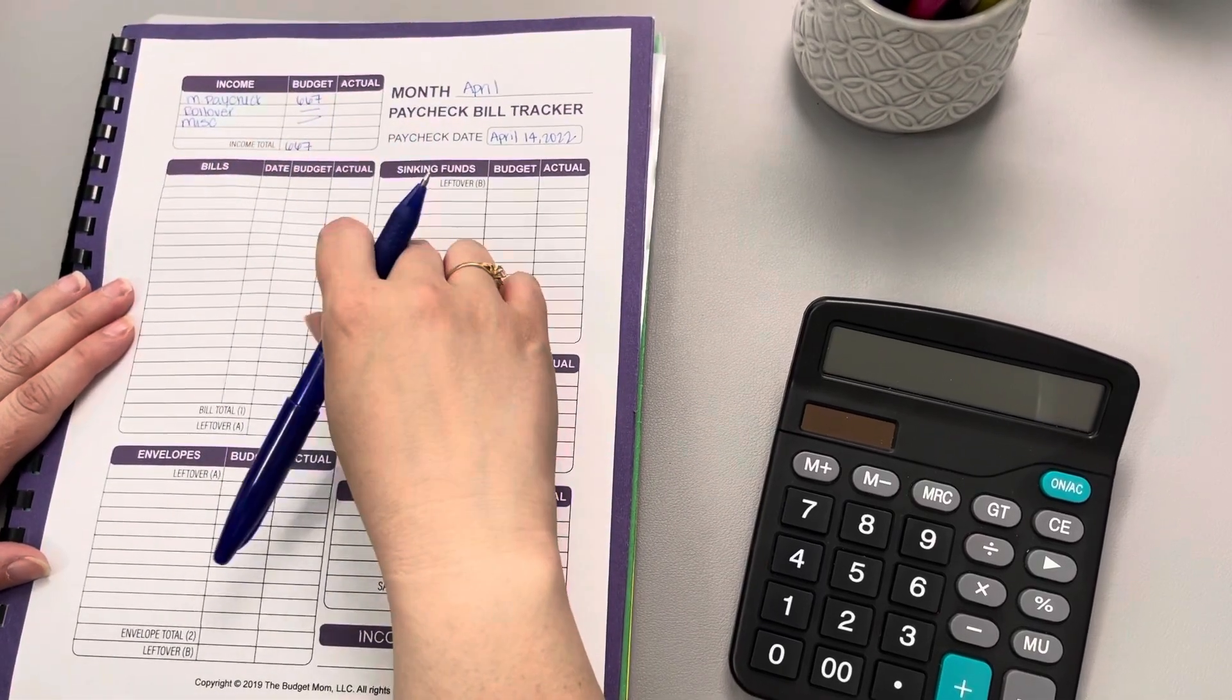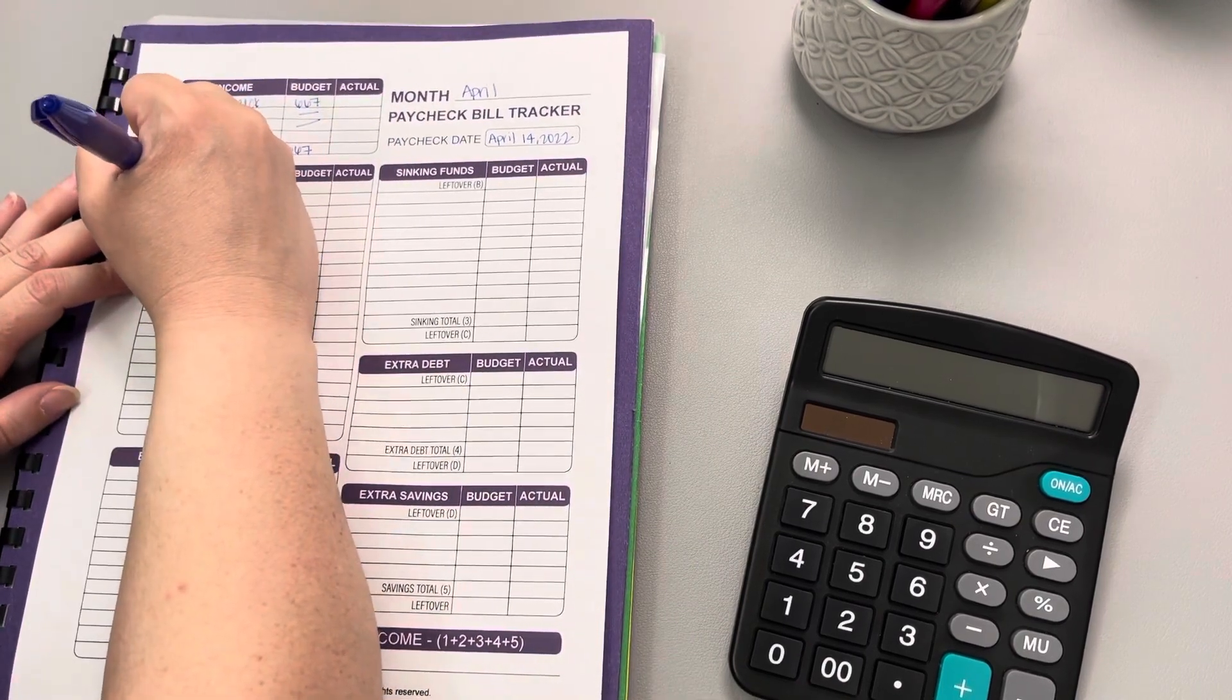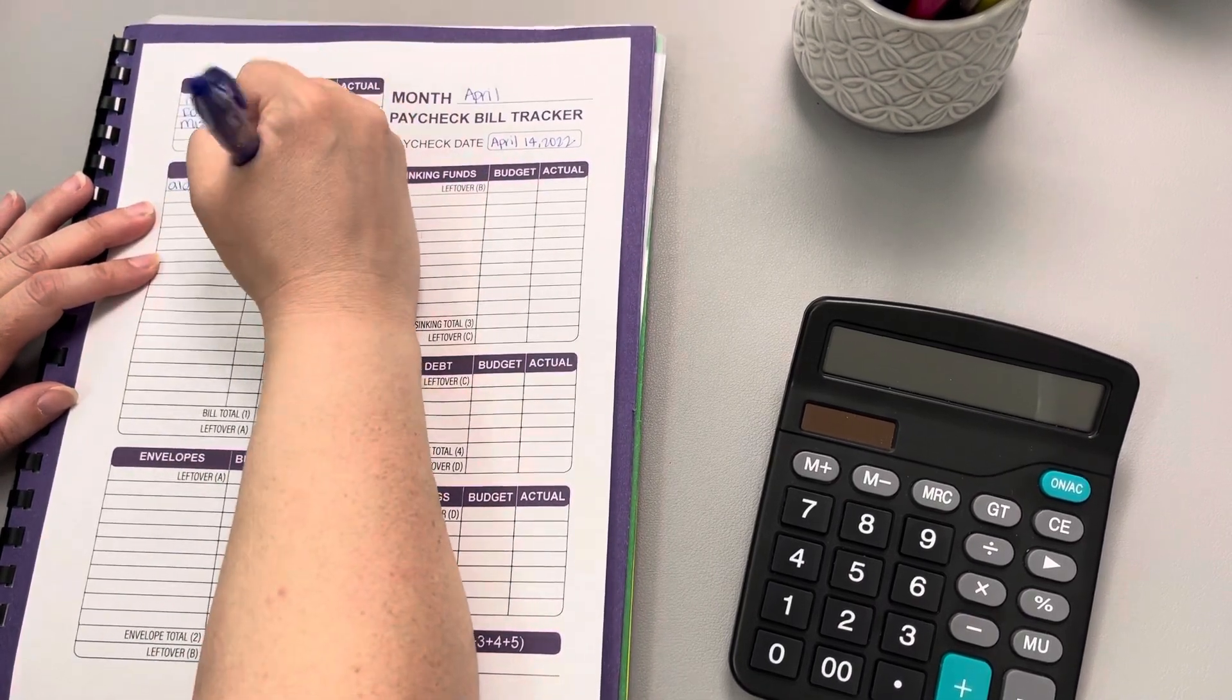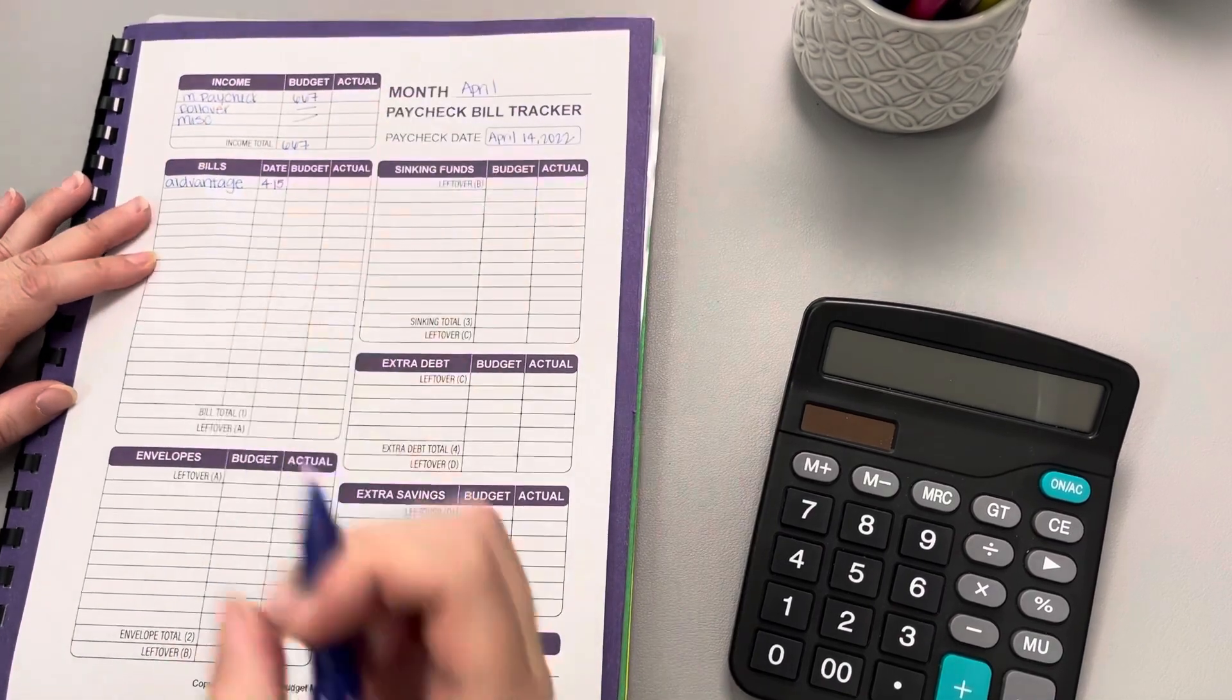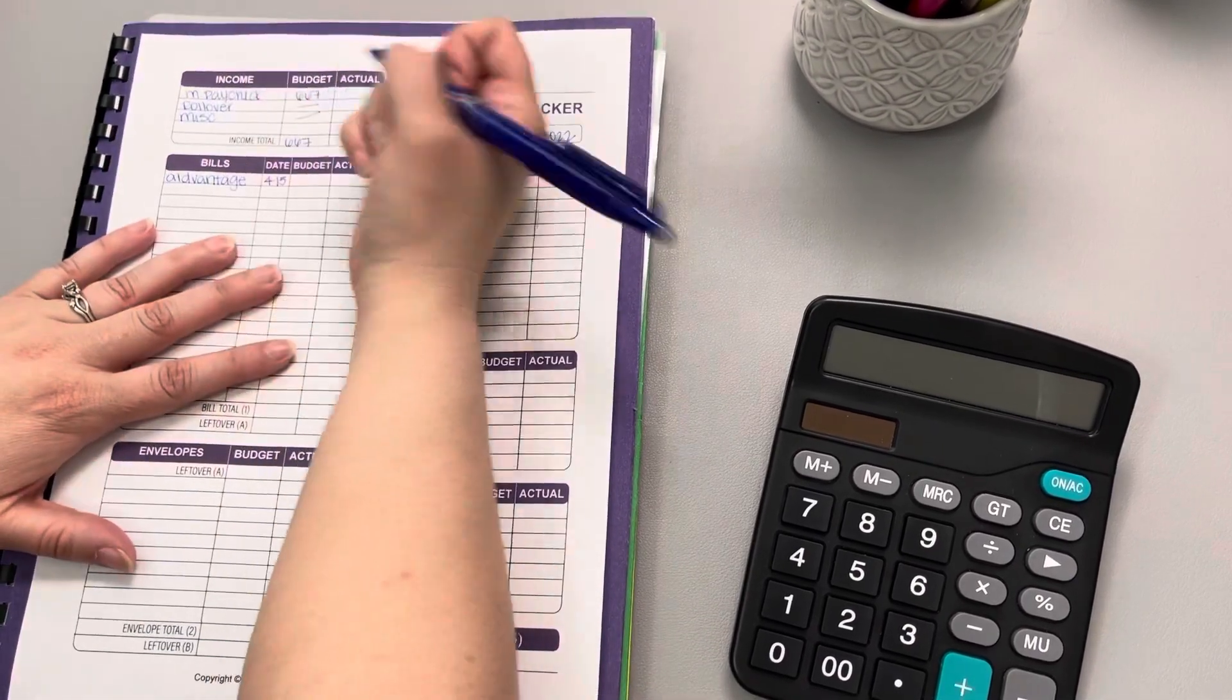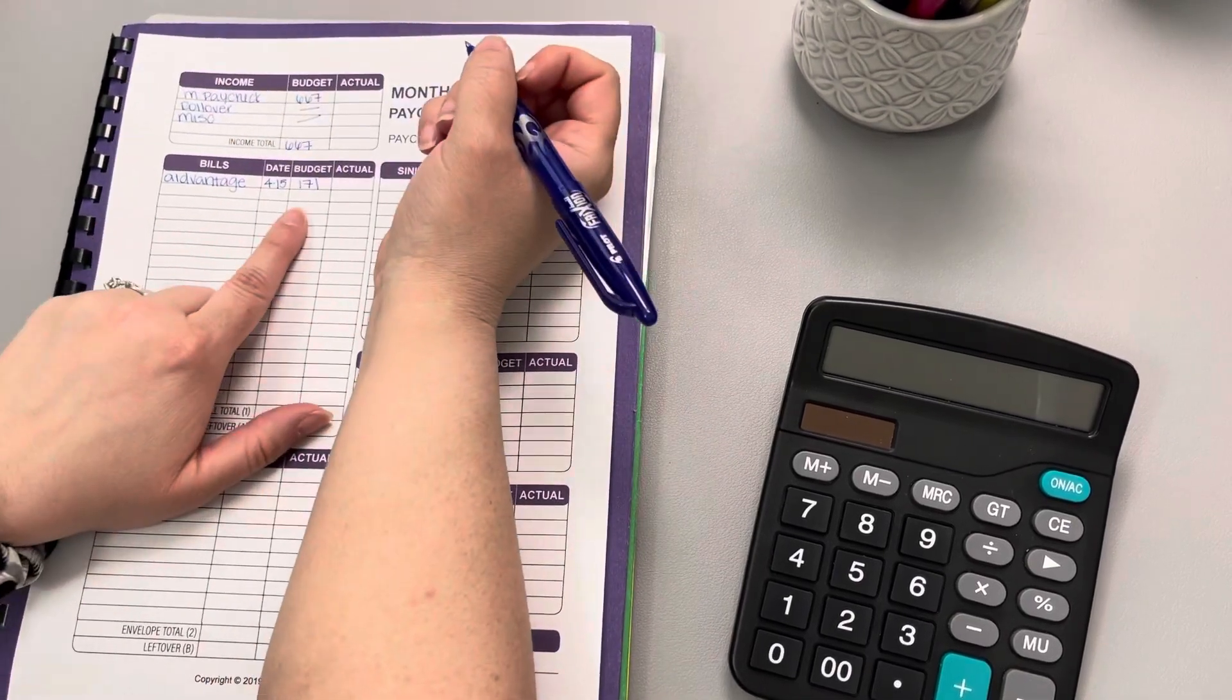Now we have three bills that come out during this week. The first is Advantage, which is my husband's student loan. We do know that it is still on pause and it has been extended, but we have chosen to continue making payments throughout this whole time just so it goes directly to the principal. So we usually budget $171 for that.